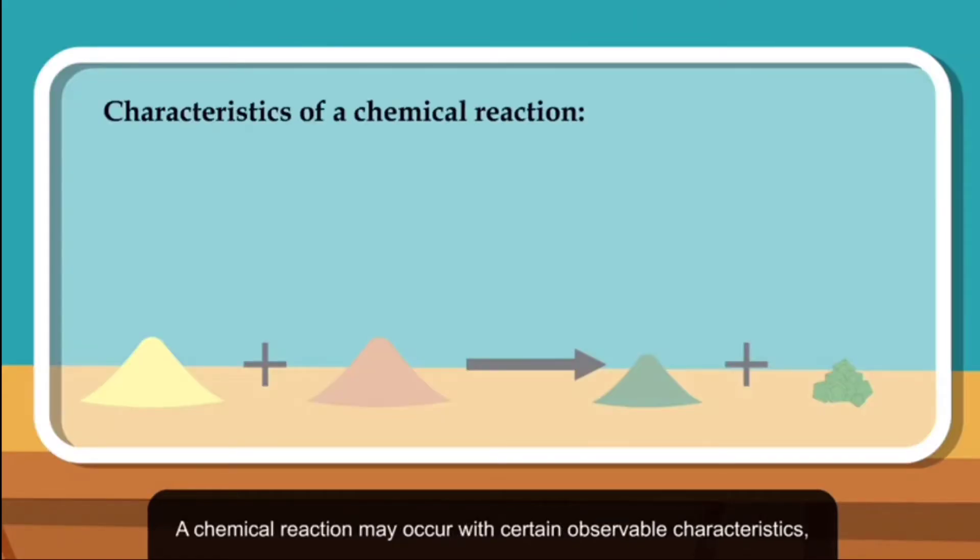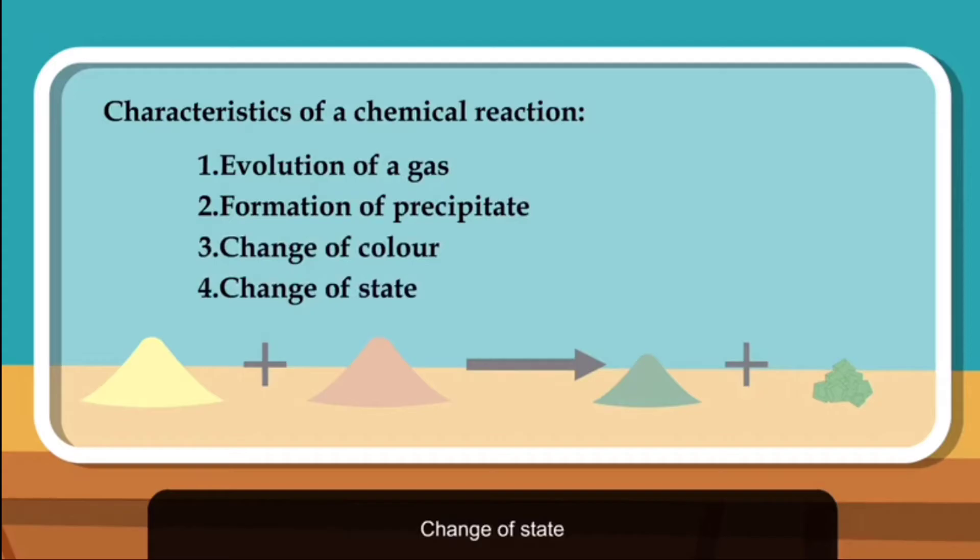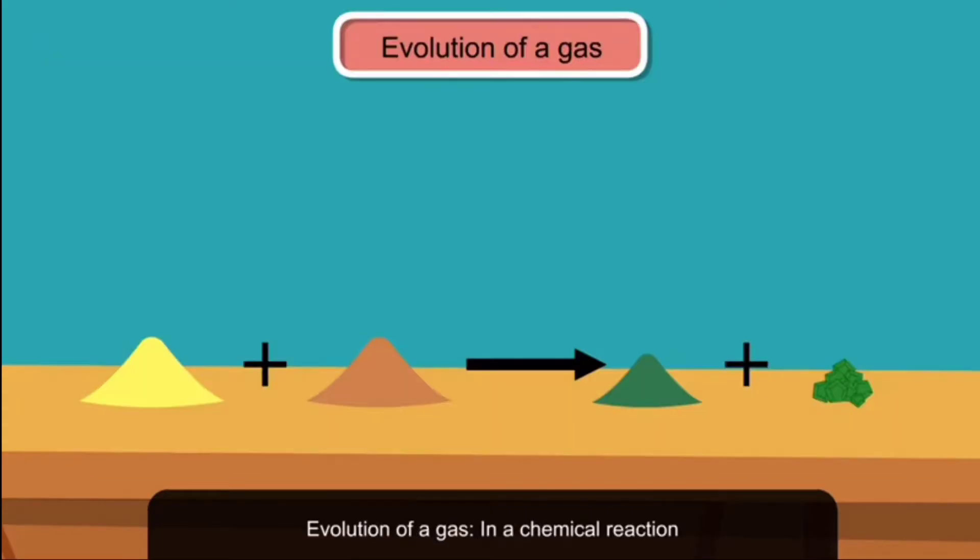A chemical reaction may occur with certain observable characteristics, such as evolution of a gas, formation of precipitate, change of color, change of state, change of taste, evolution of smell, and release or absorption of heat. Evolution of a gas: In a chemical reaction, sometimes a gas may evolve.